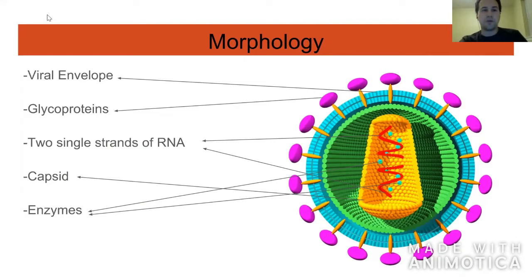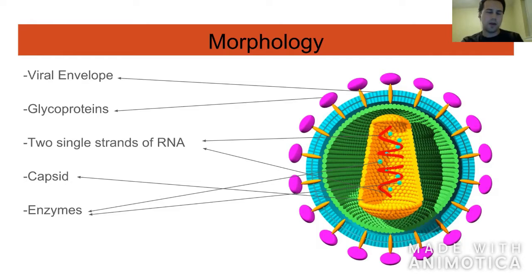To start out, just to do the morphology — just to get an idea of the structures we're looking at with this virus — some of the distinguishing factors: this virus does have a viral envelope, and its genome has two strands of RNA. These glycoproteins help it specify which host cell it's going to attach itself to. It has a capsid which protects the genome, and it has some enzymes that we'll discuss later that help with its reproduction.